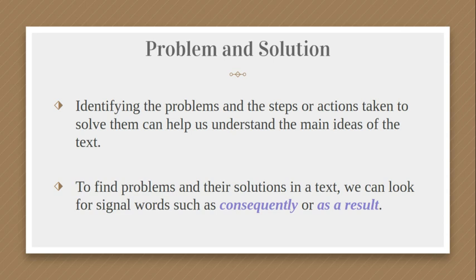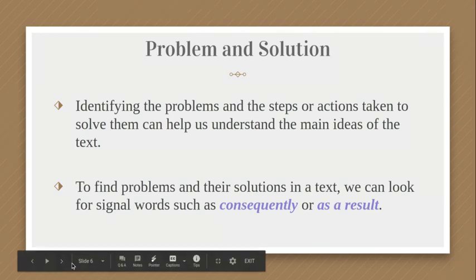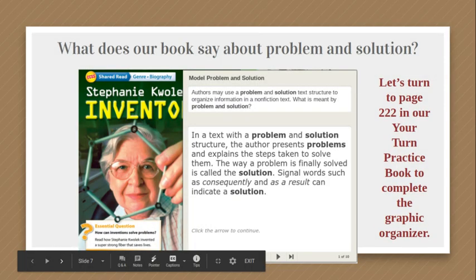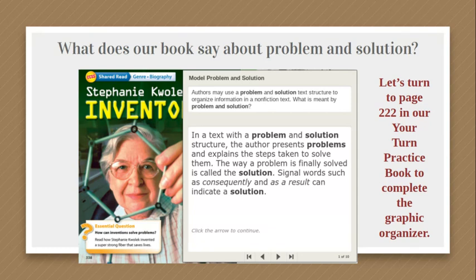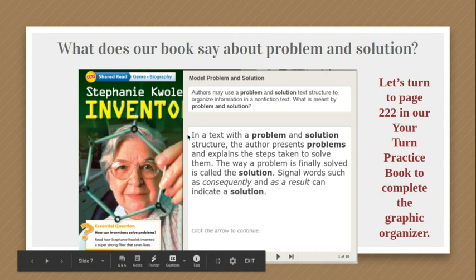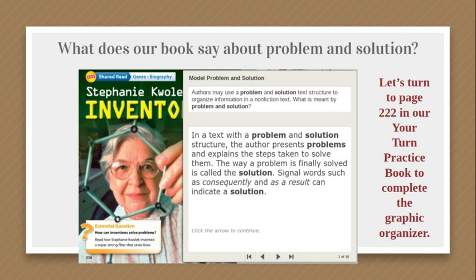Identifying the problems and the steps or actions taken to solve them can help us understand the main ideas of the text. To find problems and their solutions in a text, we can look for signal words. In our book, it says: in a text with a problem and solution structure, the author presents problems and explains the steps taken to solve them. The way a problem is finally solved is called the solution. Signal words such as 'consequently' and 'as a result' can indicate a solution.